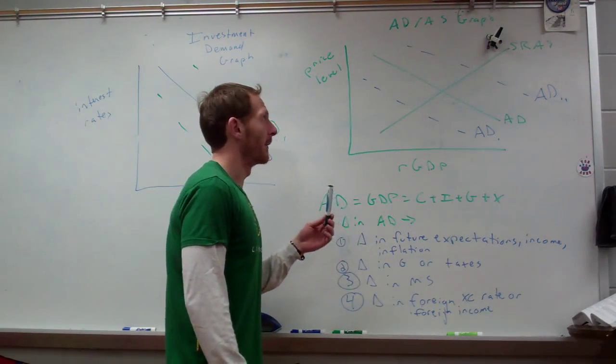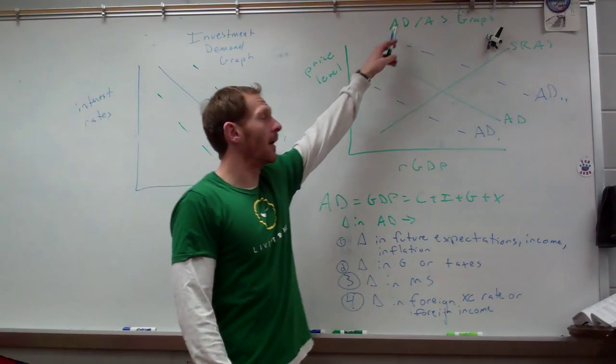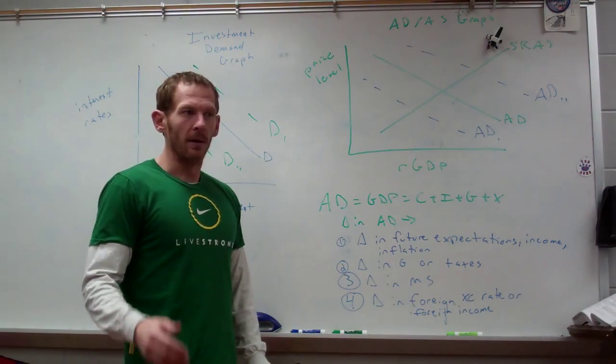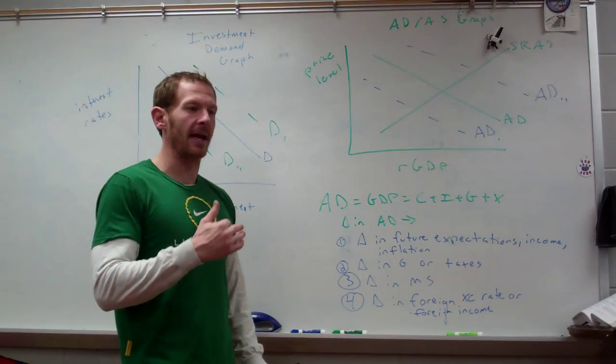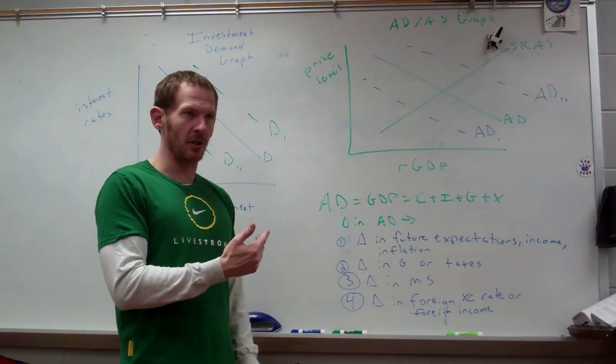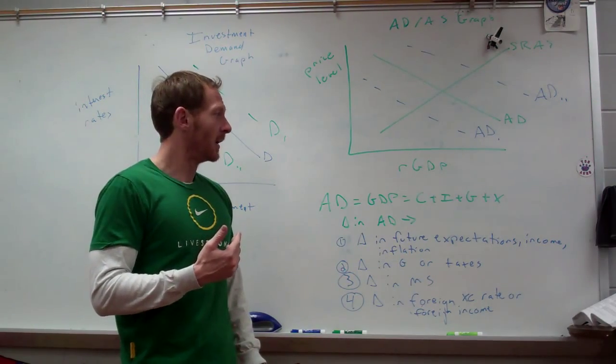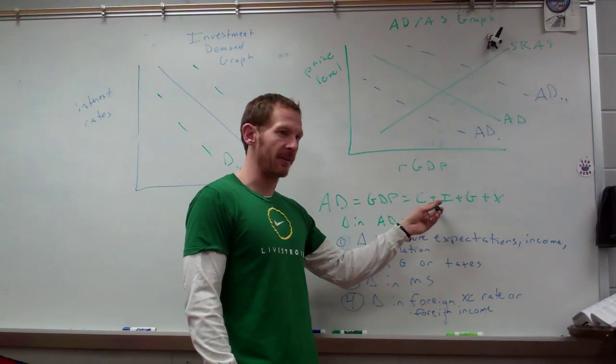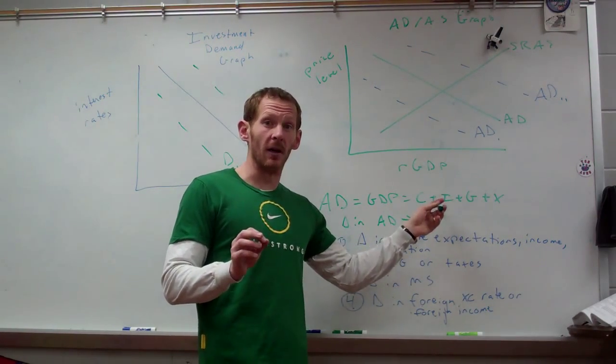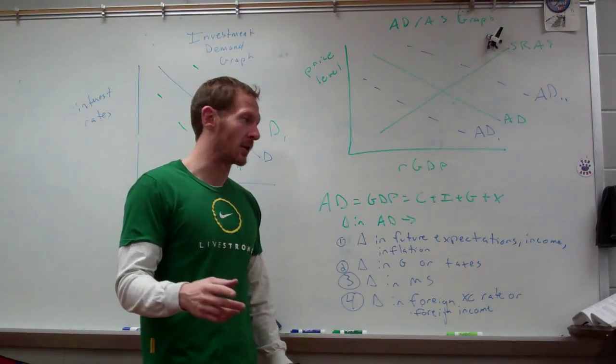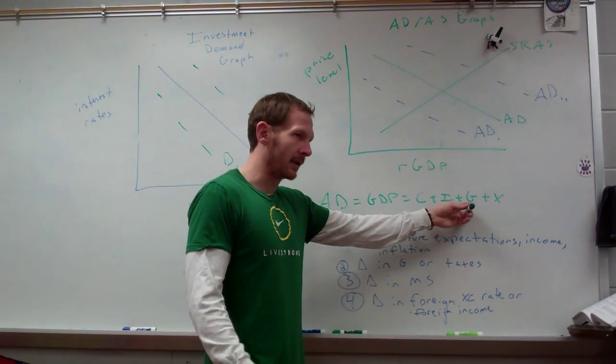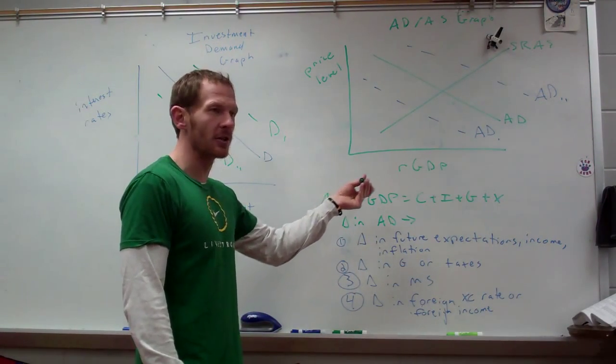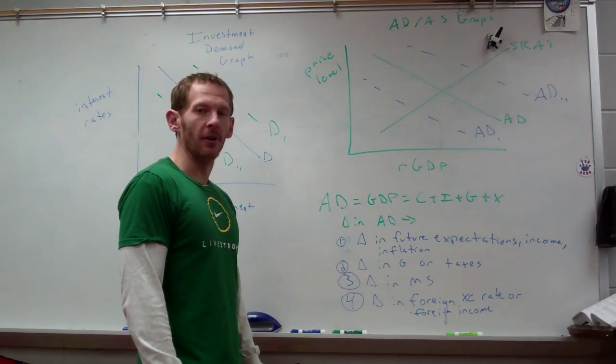Now I want to talk about the mother of all curves in AP Economics. This is the aggregate supply aggregate demand graph. We're looking at aggregate demand first. We've looked at the Keynesian graph. You've seen how the Keynesian graph is a function of real GDP. It's a function of C plus I plus G plus X, consumer spending plus investment. Remember investment in terms of investing in capital goods, not in terms of stocks and bonds. Government spending and then net exports.